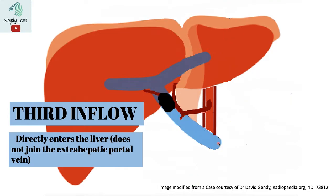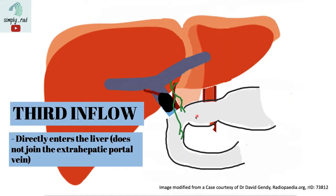A second example is when there is a block in the portal vein. When this happens, blood from the gut needs to find a way to get into the liver. Third inflow vessels draining the pylorus and duodenum would allow blood to reach the liver by bypassing this obstruction. This is what we call the cavernous transformation of the portal vein, seen in portal vein thrombosis.